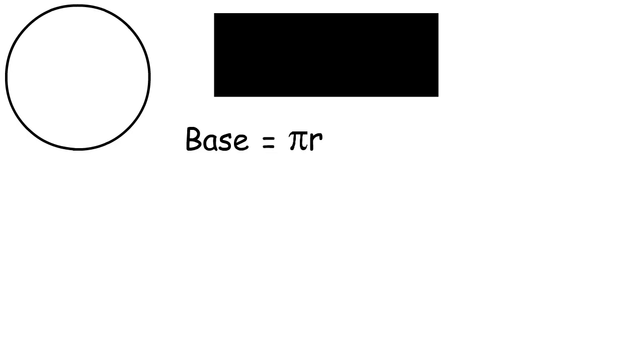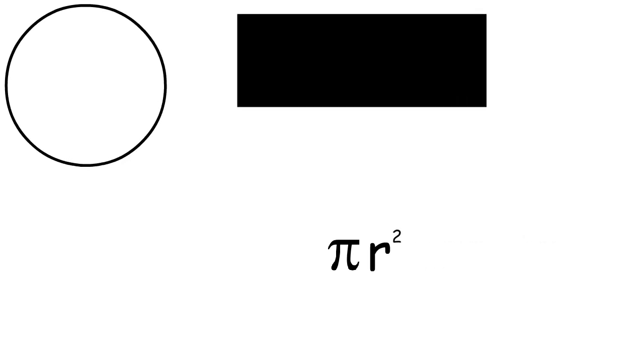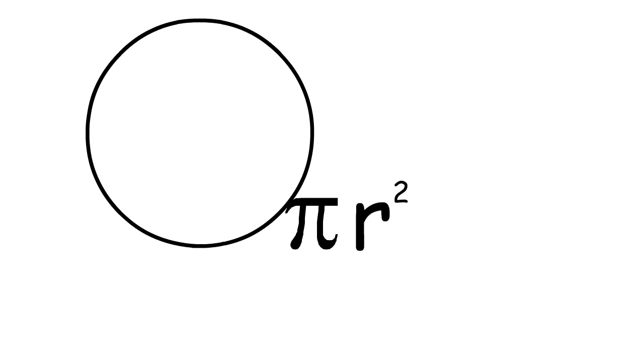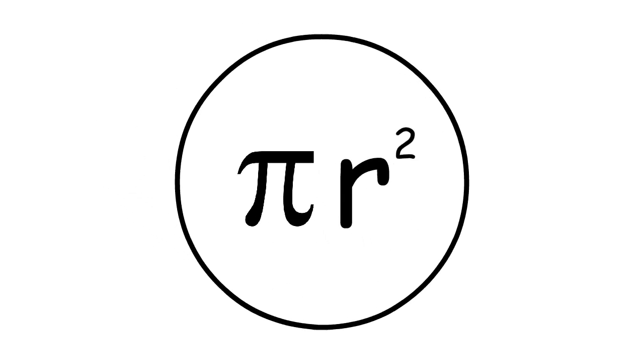So now base times height becomes pi r times r. Combine the r's together and we have pi r squared, which is equal to the area of the rectangle, which is equal to the area of the circle. So pi r squared can be used to calculate the area of any size circle that exists.